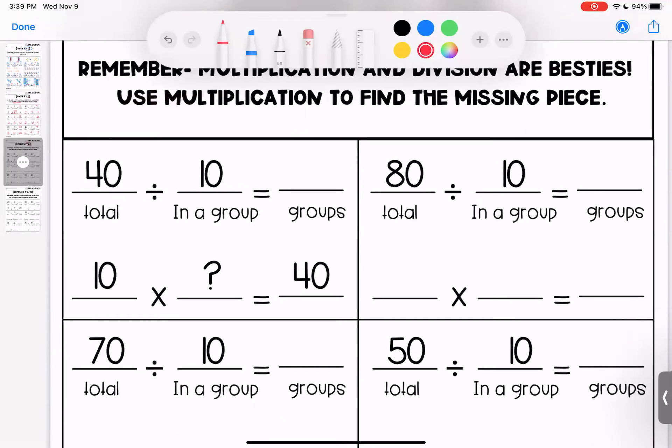Because maybe I don't know forty divided by ten, but I know ten times four is forty, which means that four is my missing piece. I can also think how many tens does it take to make forty? And I can count up ten, twenty, thirty, forty. If I do that, I needed four tens, which is also my missing number.